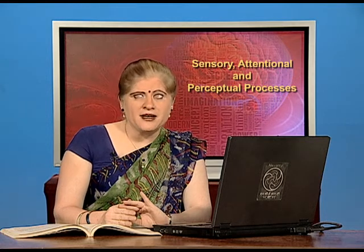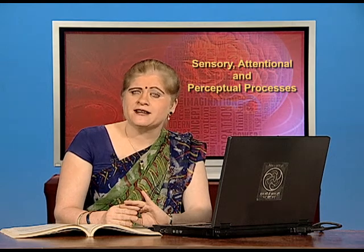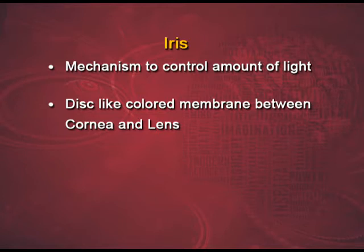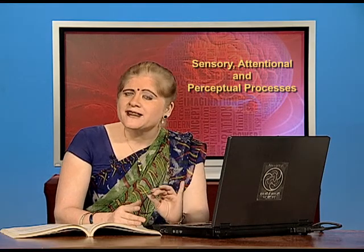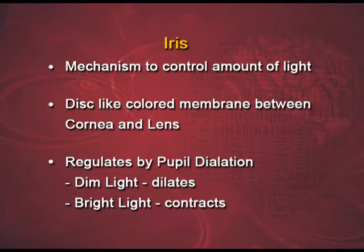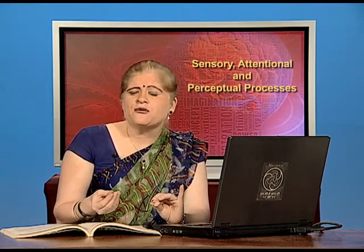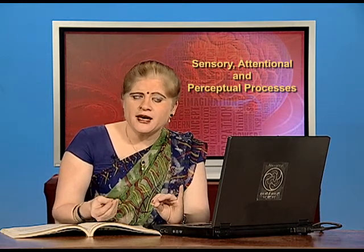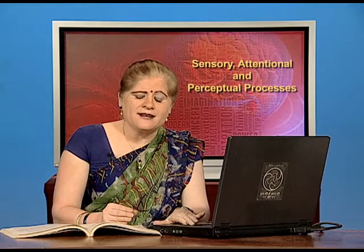There is another mechanism in our eye similar to that of a camera — the mechanism to control the amount of light that enters our eye. This is done with the help of the iris, a disc-like colored membrane which lies between the cornea and the lens. It is regulated by pupil dilation. When you go into dim light, your pupil dilates or expands. On the contrary, when you are in very bright light, lesser light needs to enter the eye, so the pupil contracts or becomes smaller. The iris does this.